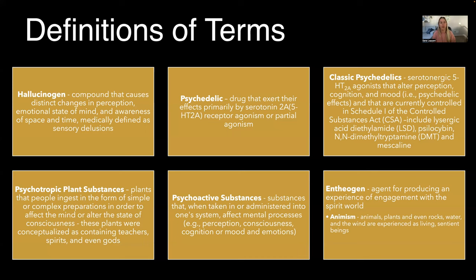An entheogen — which you will hear used interchangeably with hallucinogen and psychedelic, but they're really not — is an agent for producing an experience of engagement with the spirit world. This is a term used within indigenous communities and cultures. A component of an entheogen is animism, where animals, plants, and even rocks, water, and wind are experienced as living sentient beings.